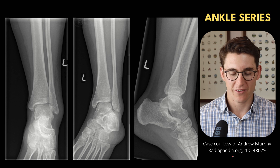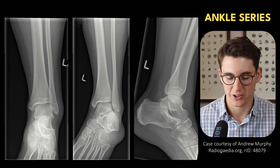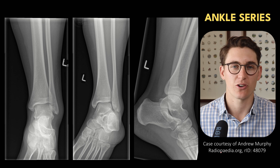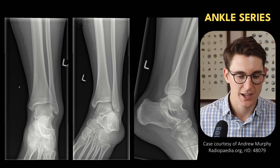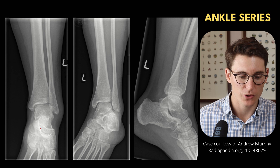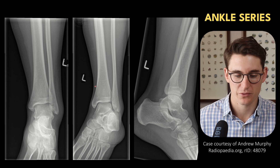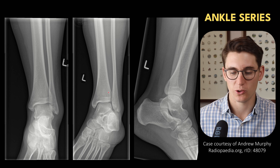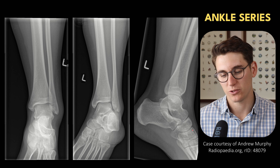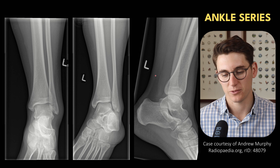So we have a look at our ankle series here. There are three main radiographs that we take when looking at the ankle: an AP or frontal radiograph, a medial oblique or mortise view, and a lateral view of the ankle.